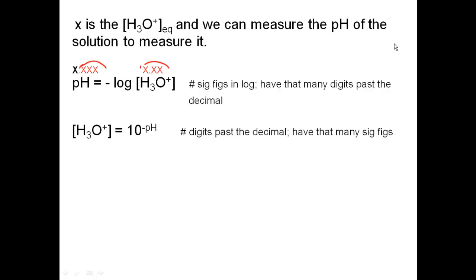This one, the number of digits past the decimal in my pH, will tell me how many sig figs I have in my concentration. So, example here, I got two digits past the decimal in my pH, then that would mean I have two significant figures in my hydronium ion.